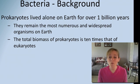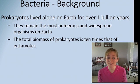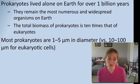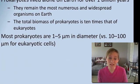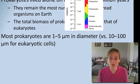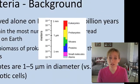The total biomass of prokaryotes is 10 times that of all the eukaryotes — plants and animals combined. That is just crazy. Let's talk a little bit about size. They're much smaller than eukaryotes. Eukaryotic cells are the largest, then prokaryotes are the second largest.